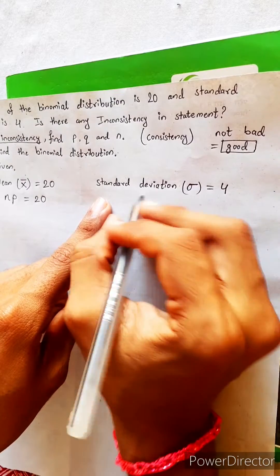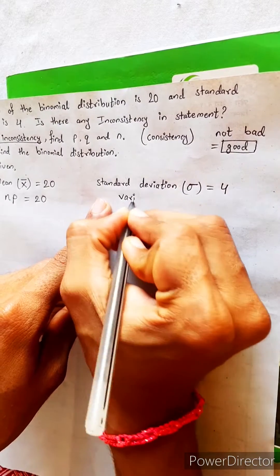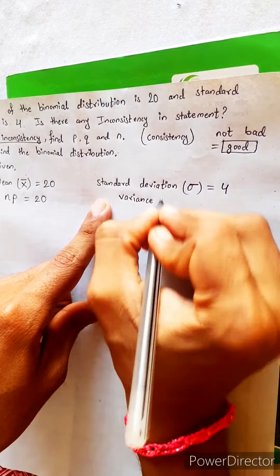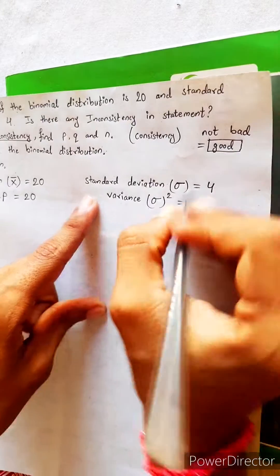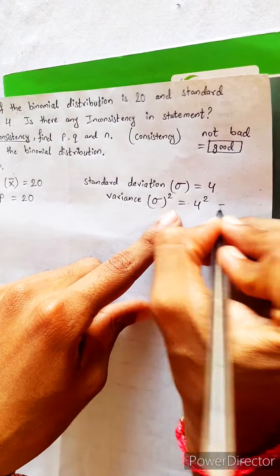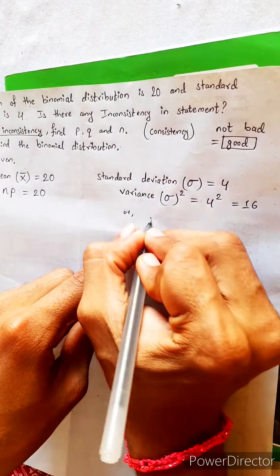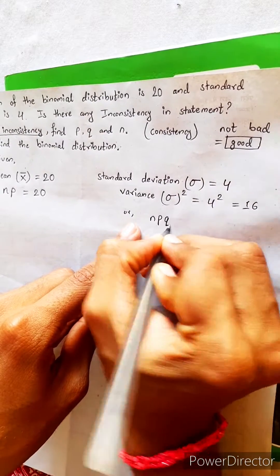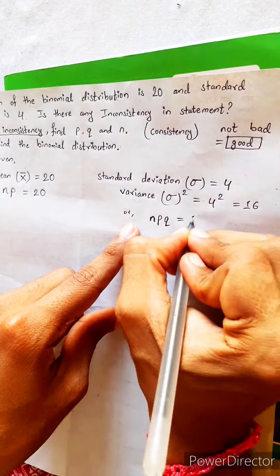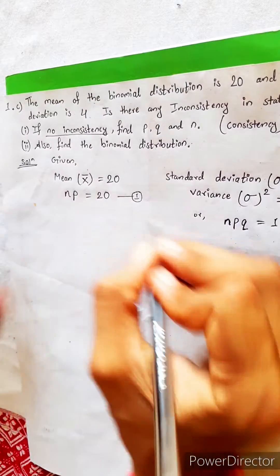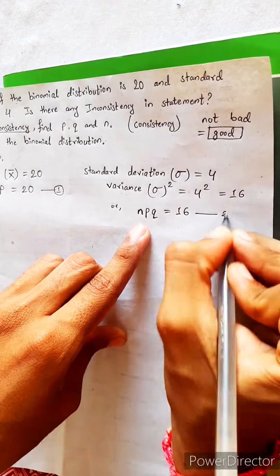But we don't need this. It's of no use. We use variance. Variance is sigma square. This is very important. This is 4 square. It is 16. Or, similarly, formula of variance is NPQ. NPQ. This is equals to 16. Look here. NP equals to 20. Equation 1. NPQ equals to 16. Equation 2.